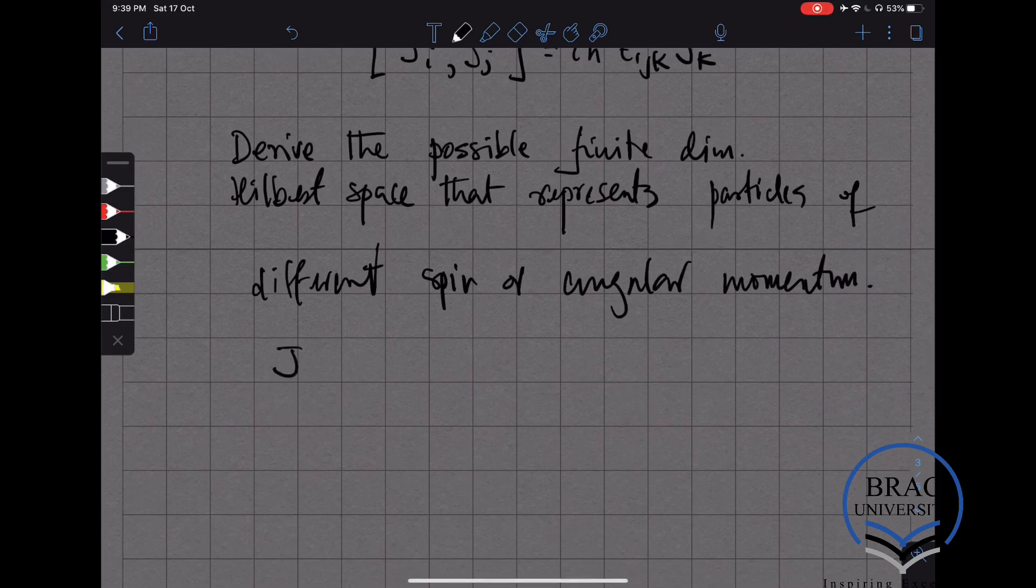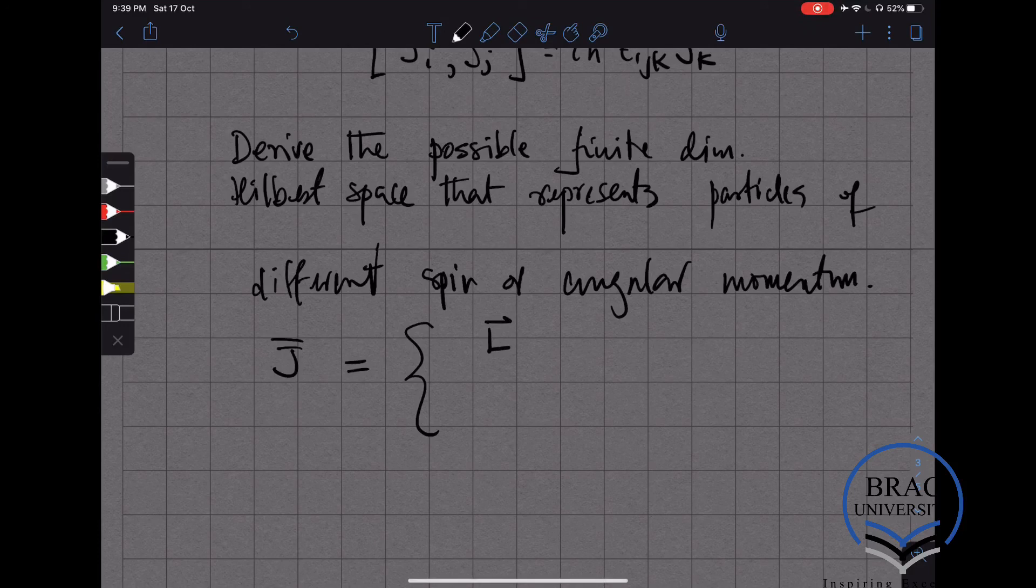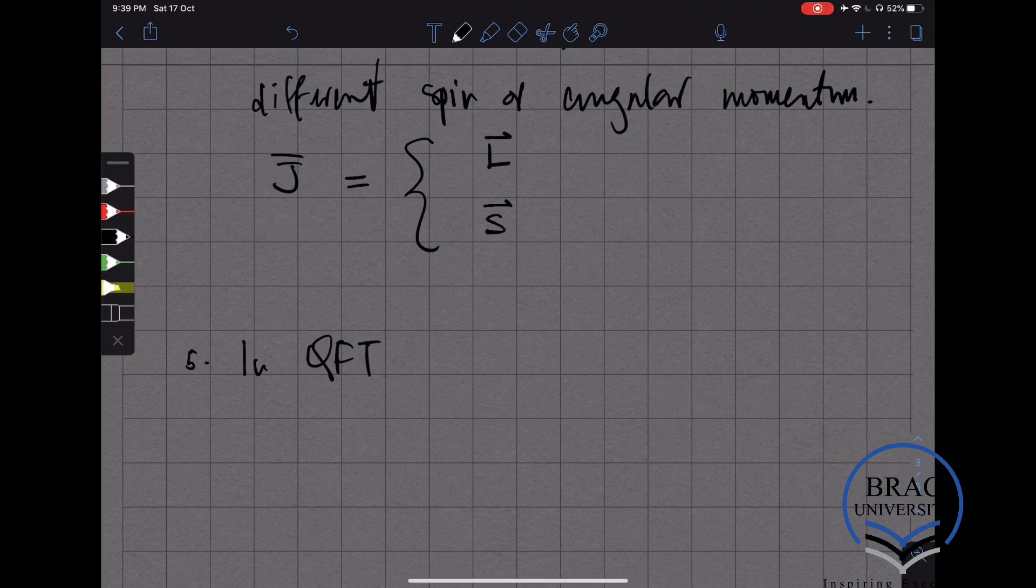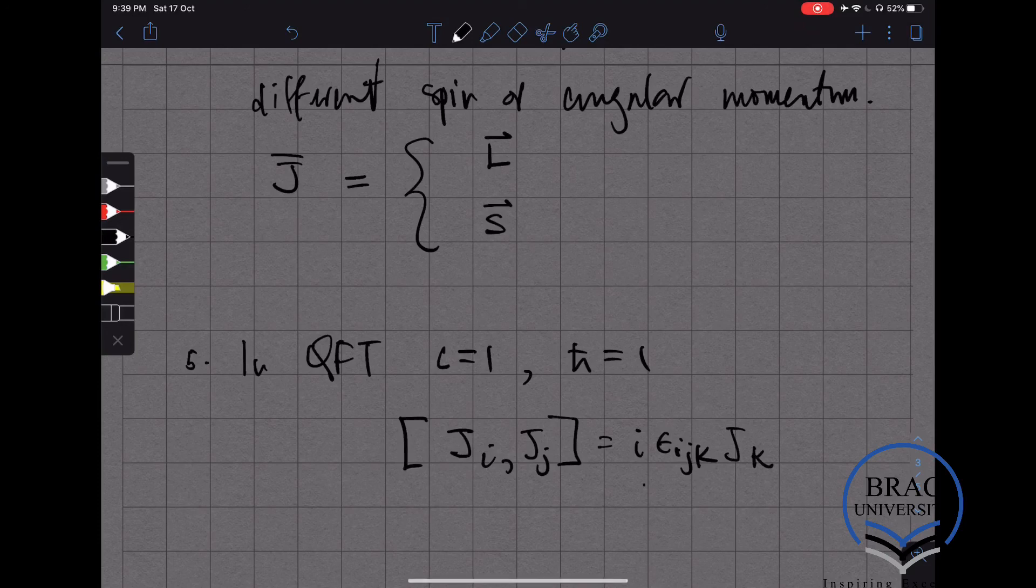What we are going to do is that by J, we are going to denote either the orbital angular momentum operator or the spin operator. The last comment I have to make is that in quantum field theory we choose the natural units in which c equals 1 as well as h bar equals 1. If I use this unit, then the angular momentum algebra becomes the commutator of Ji and Jj is i epsilon_ijk Jk.